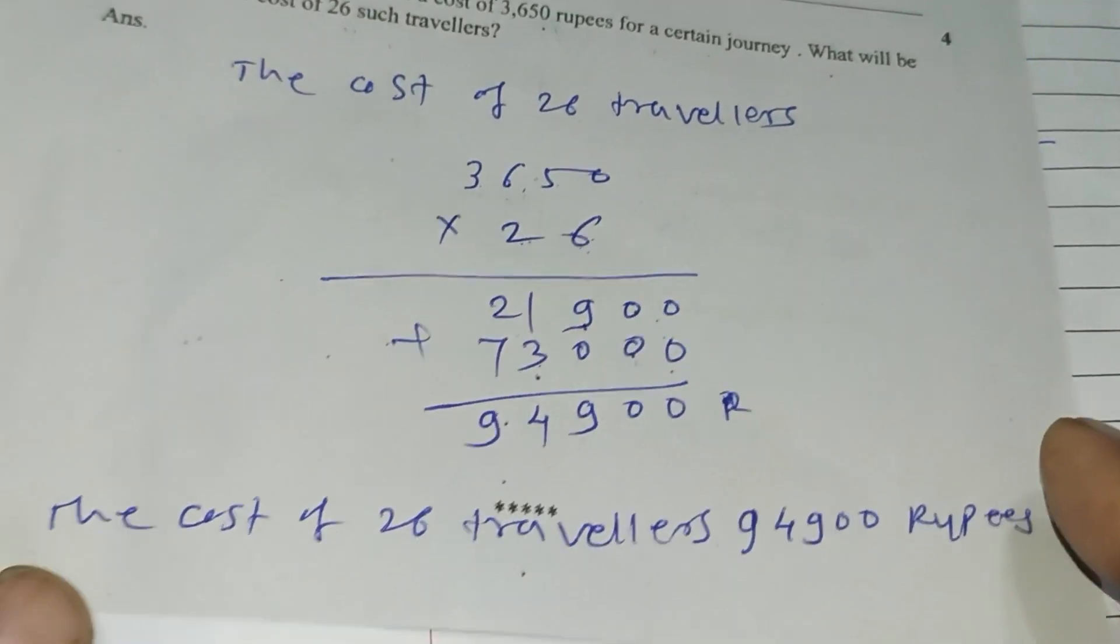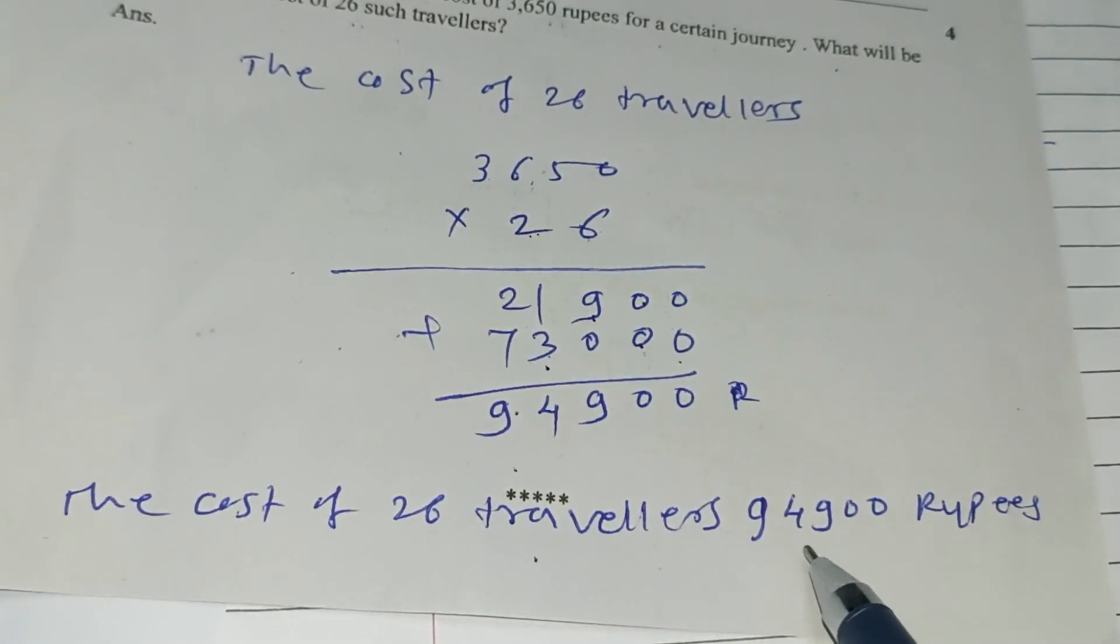Here 94,900. The cost of 26 travelers is equal to 94,900 rupees.